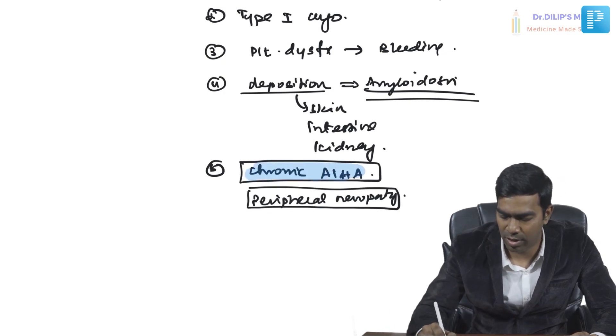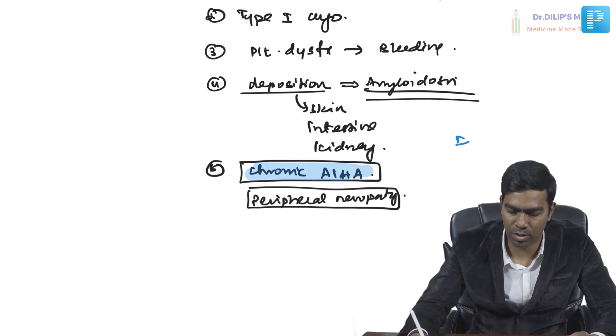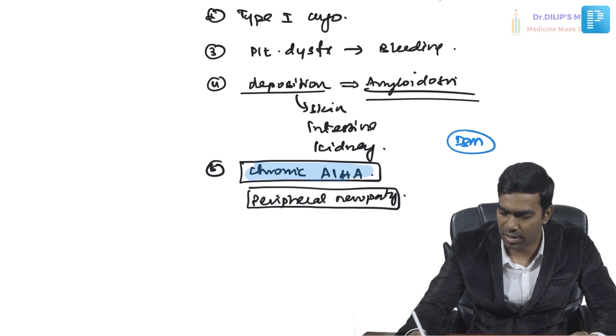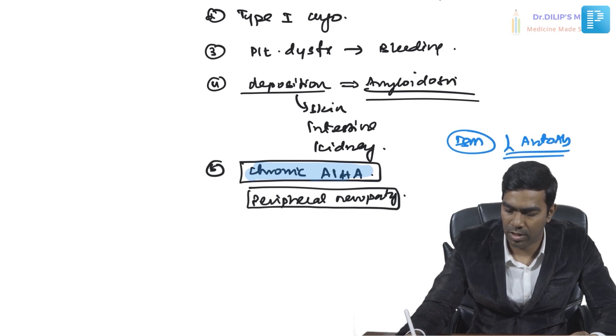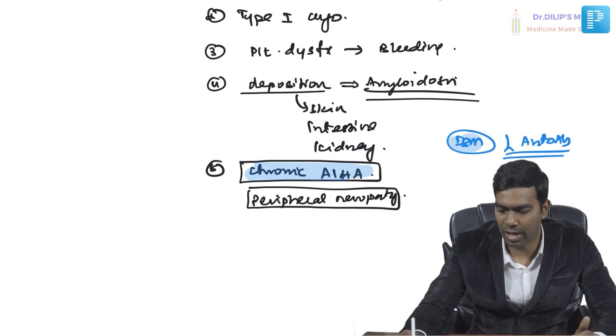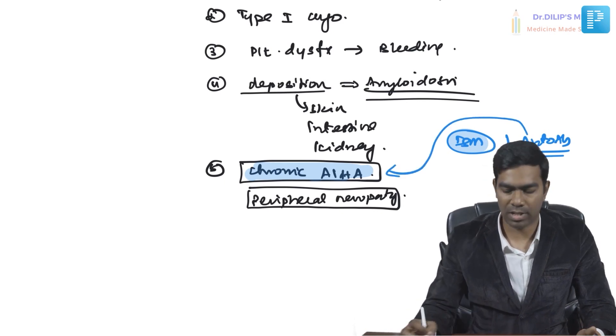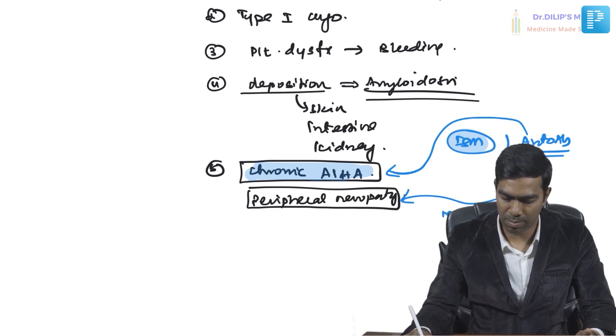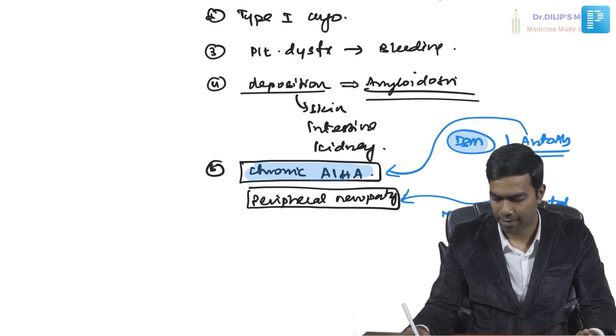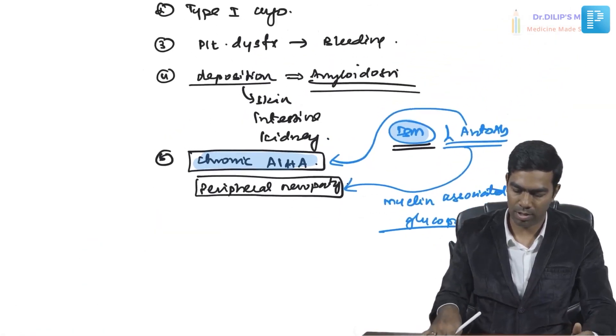Patients can also develop chronic autoimmune hemolytic anemia. This is not due to excess normal IgM, but because this is an abnormal IgM that can act as an autoantibody, damaging RBCs. Additionally, this autoantibody can target myelin-associated glycoprotein, resulting in peripheral neuropathy. Both the hemolytic anemia and peripheral neuropathy are due to the autoantibody nature of the abnormal IgM.